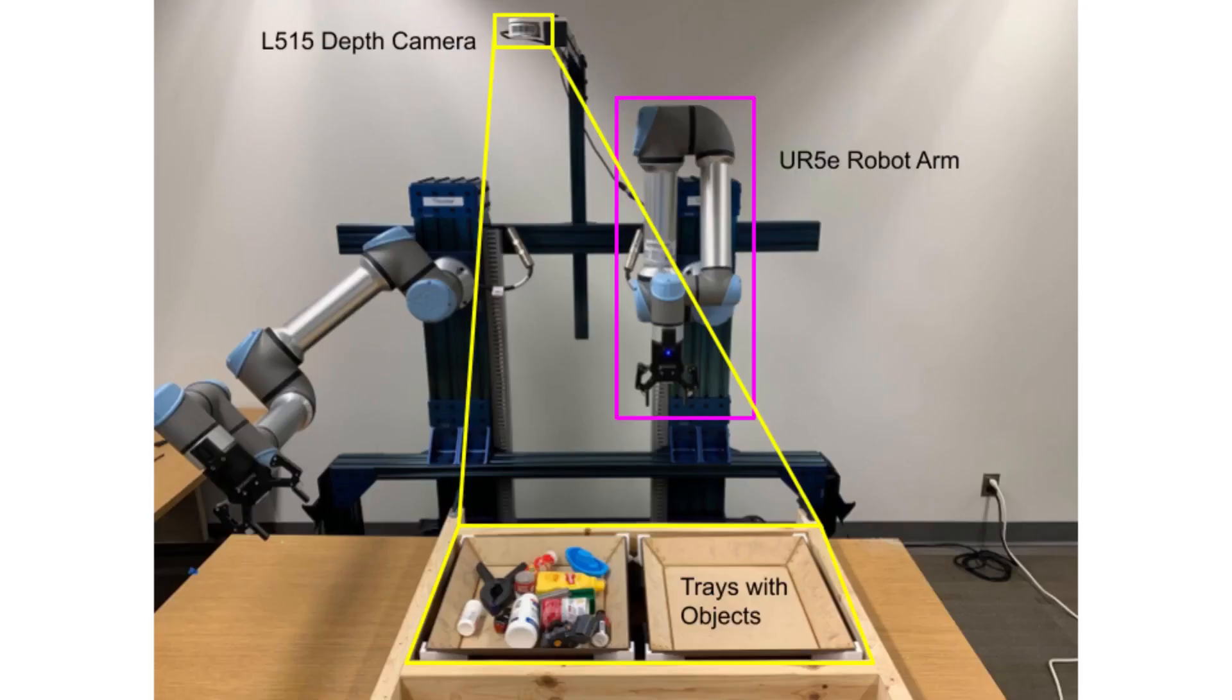The algorithm starts with a depth observation that is a top-down view of two bins. The image is cropped to show only the bin the robot is supposed to pick from. Here is an example of the depth image of a bin with objects.